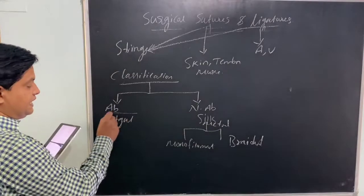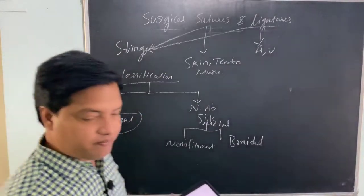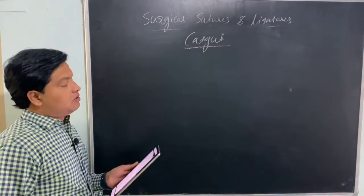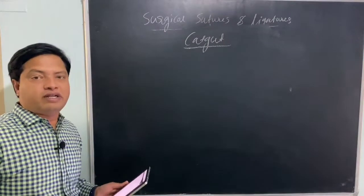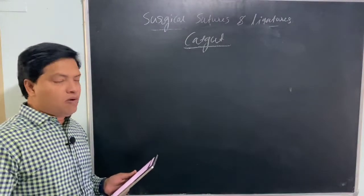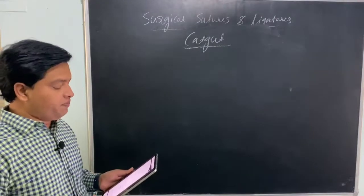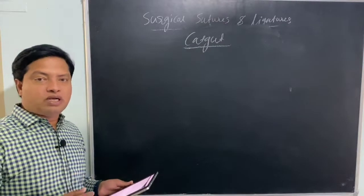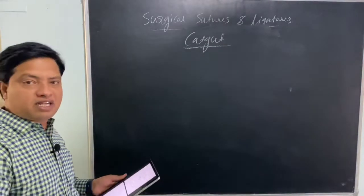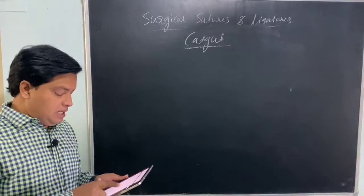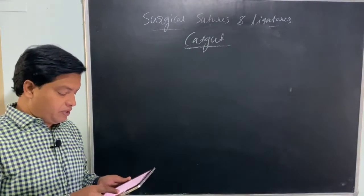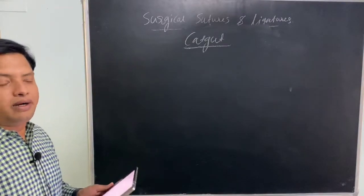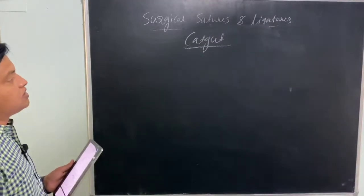Now we will see in detail about catgut from the point of view of GPAT. We will cover the different names or synonyms of catgut, its source, contaminants, how to remove those contaminants through sterilization, how to verify sterility after sterilization, and finally how to harden the catgut.